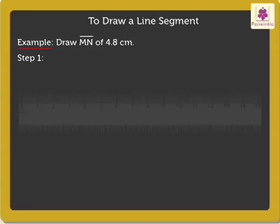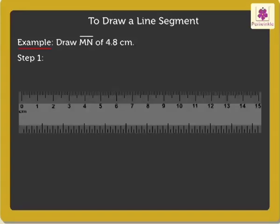Step 1: Take a ruler and mark point M at 0 centimeters on the ruler.